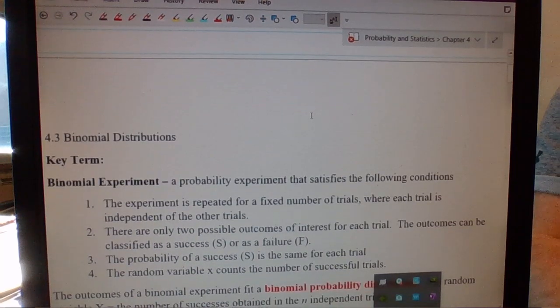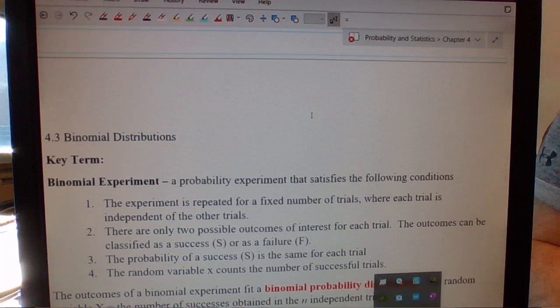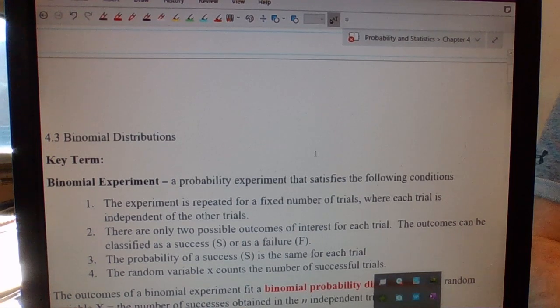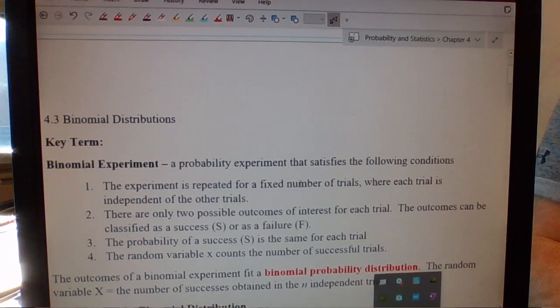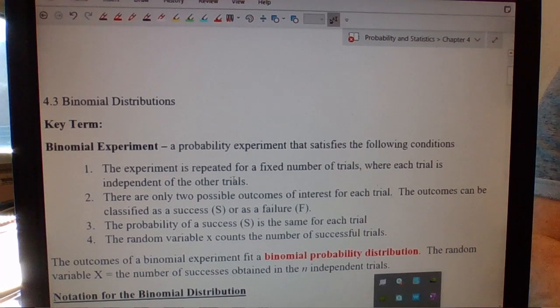You can maybe think of are there two outcomes? Because it was talking about what is the number of red marbles you get. So your outcomes could be red marbles and then not red marbles. So you could have successes, you could have failures. But where this kind of falls through and doesn't allow us to have a binomial distribution is the idea that each trial is independent of the other trials.